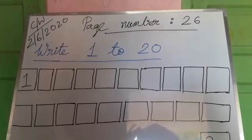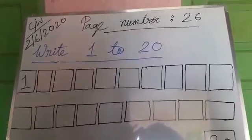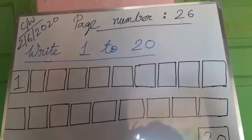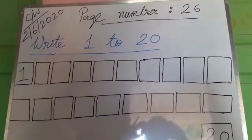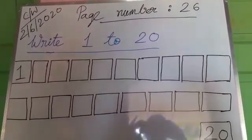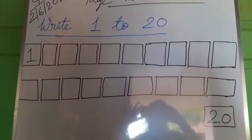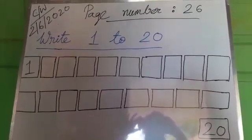As you can see this is of page number 26. Open page number 26. See on top it is written write 1 to 20. You have to write from 1 to 20. You can see there are boxes. 1 is written on the left side and 20 on the downmost side. You have to finish.